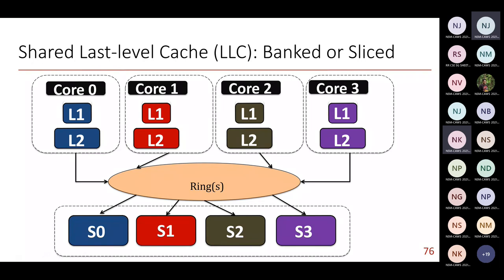A subtle point: though the last-level cache is shared, its huge capacity — tens of MBs — creates latency and bandwidth issues. Modern processors use sliced last-level caches. For example, an 8 MB cache becomes four 2 MB slices (slice 0 through slice 3). All processors access all slices — it's not private to any core. The latency differs depending on which slice is closer to which core.